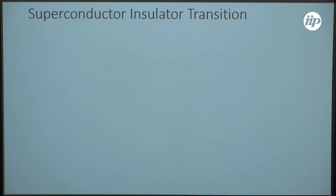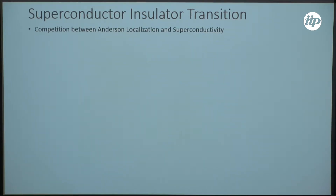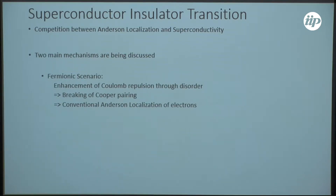Then, I want to briefly talk about the superconductor-insulator transition. It's about the competition between Anderson localization and superconductivity. There are two main mechanisms being discussed. The fermionic scenario: here, we have an enhancement of Coulomb repulsion through disorder, which leads to a breaking of the Cooper pairs, followed by standard Anderson localization of the electrons.